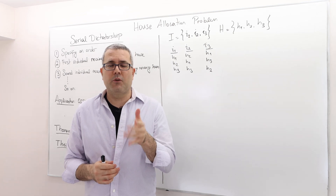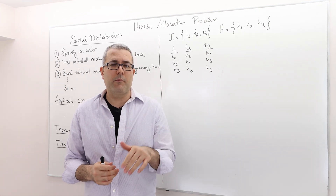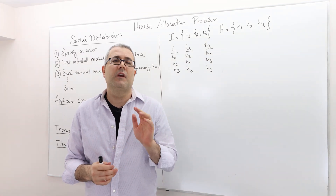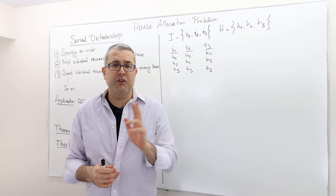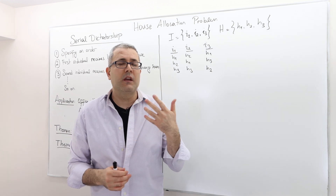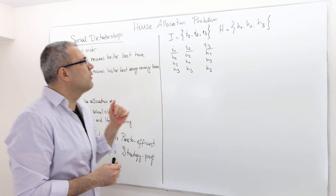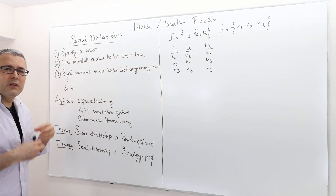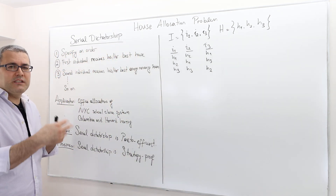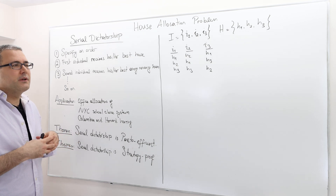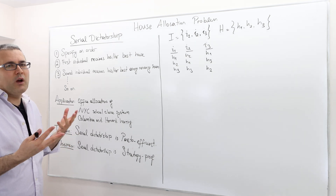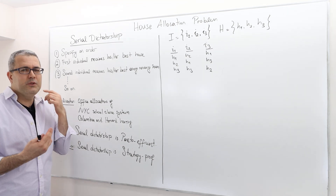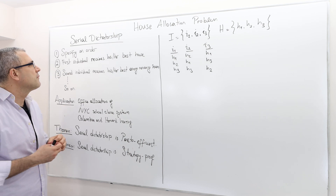In this episode, I'm going to talk about one of the most famous matching mechanisms in the house allocation problem. It's called serial dictatorship. You may wonder why we call it dictatorship — you'll see.